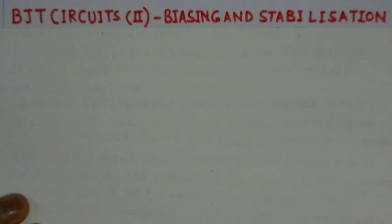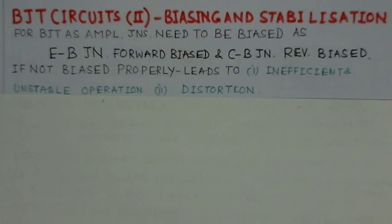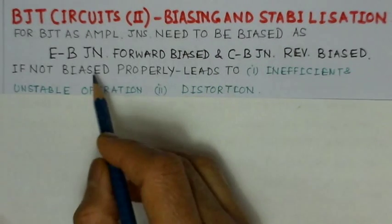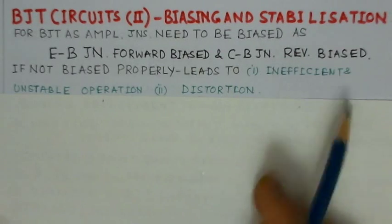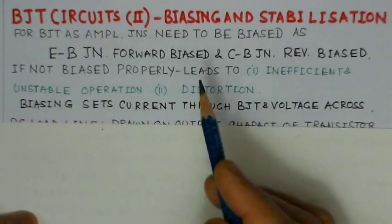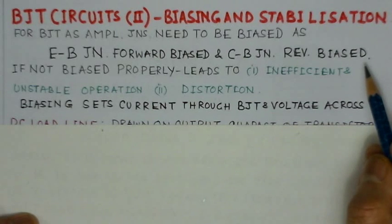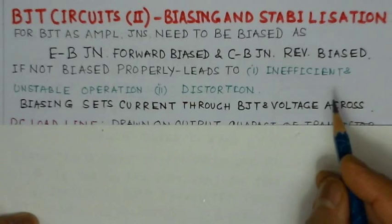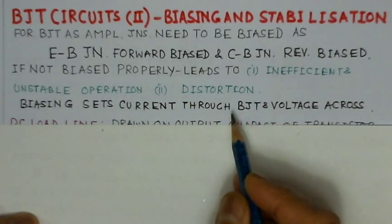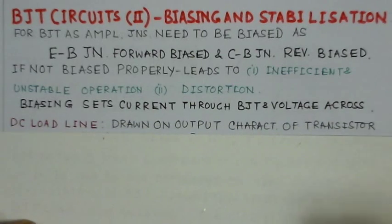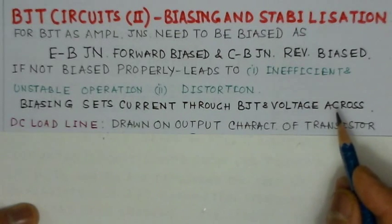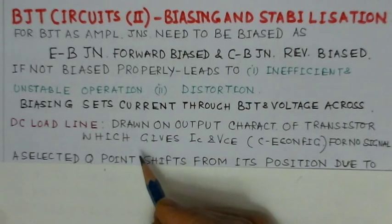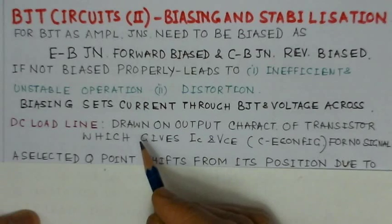For a BJT to operate as an amplifier, we need to bias it so the emitter-base junction is forward biased and the collector-base junction is reverse biased — that is basically the active mode of operation. If it is not biased properly, it leads to inefficient and unstable operation and also leads to distortion. By biasing, we set the current through the BJT and the voltage across the BJT.